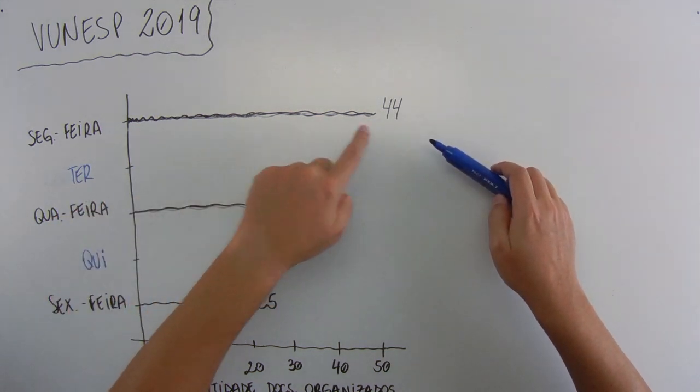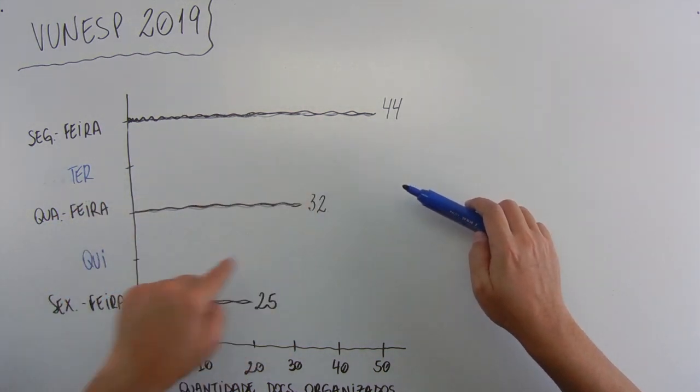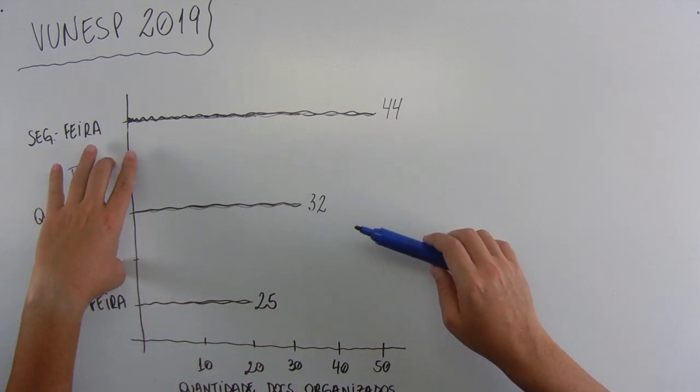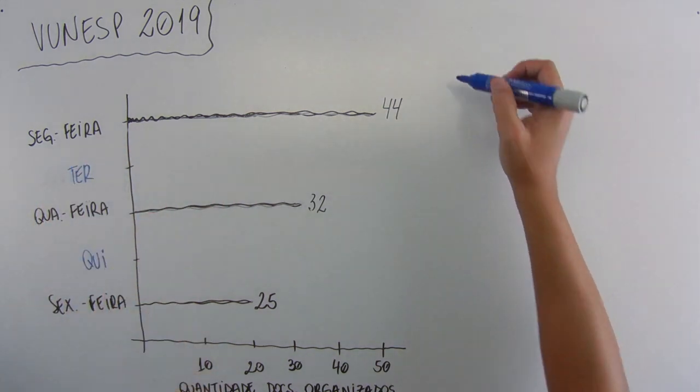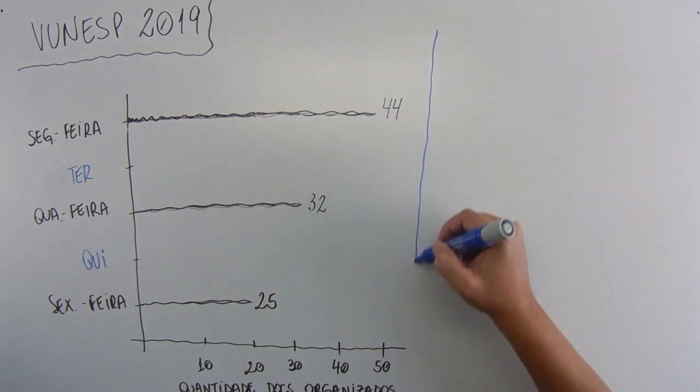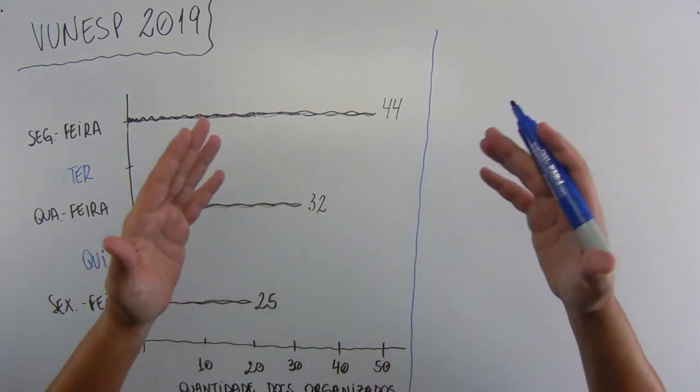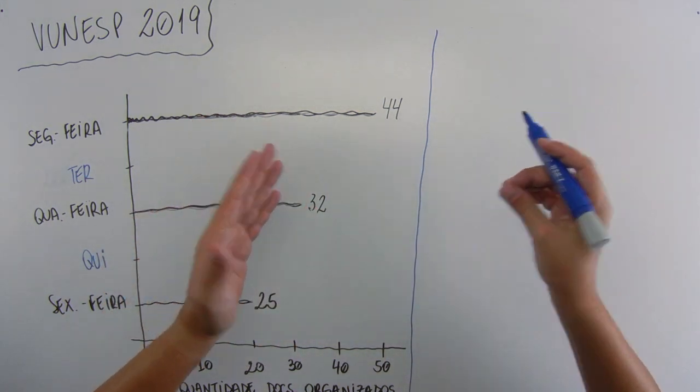So, on the 2nd, 44; on the 4th, 32; and on the 6th, 25. Okay, we don't have the values of 3rd and 5th. Okay, let's read the problem statement, separate the data to see what we have to solve, or if we can solve it looking at the graph. Many times, you can see it. But in this case, it won't work. So, let's go.